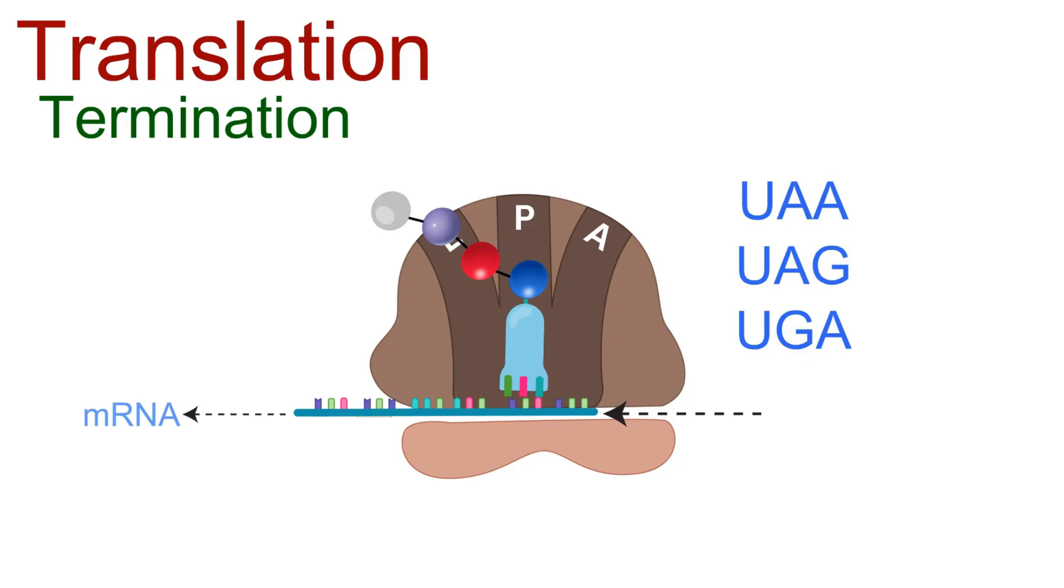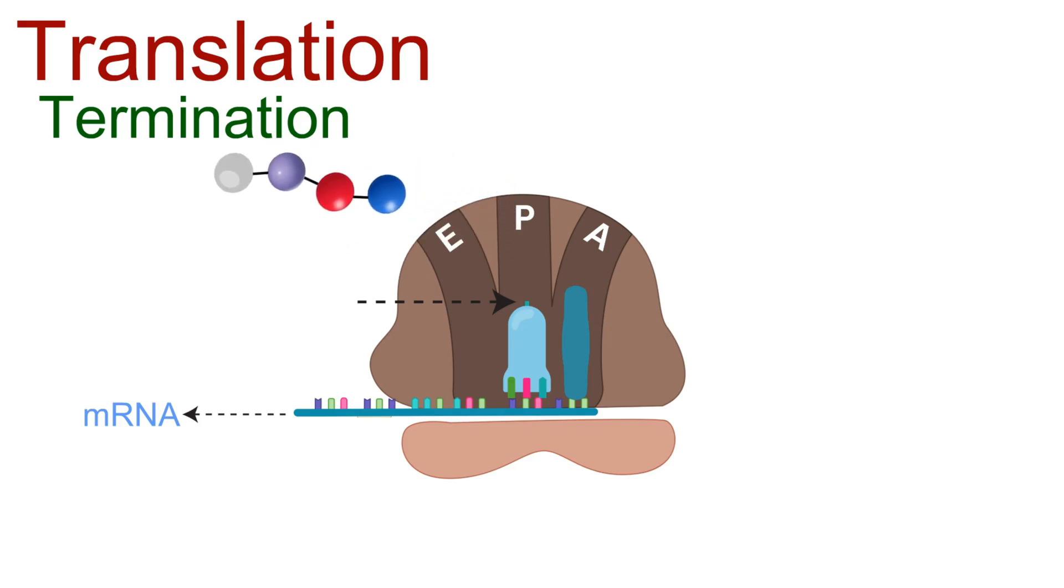Instead, they signal the ribosome that the protein is complete. A special protein called a release factor binds to the stop codon in the A site of the ribosome. This triggers the ribosome to cut the bond between the polypeptide chain and the final tRNA in the P site.